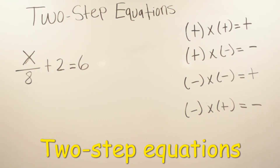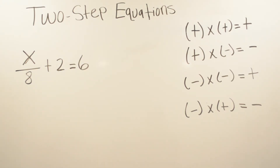Today's video is going to be about two-step equations. Before we start on our equations, let's just go back and remember: when you multiply a positive times a positive, it's going to be positive. When you multiply a positive times a negative, you're going to have a negative. When you do a negative times a negative, it's going to be positive. When you do a negative times a positive, your answer is going to be a negative.